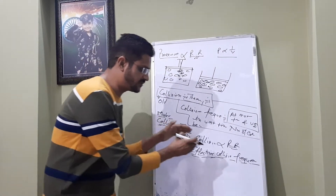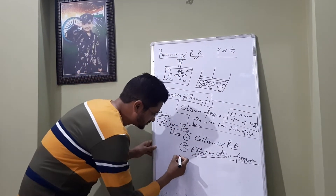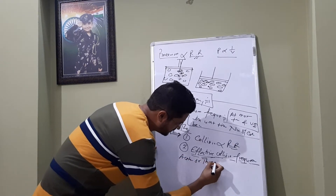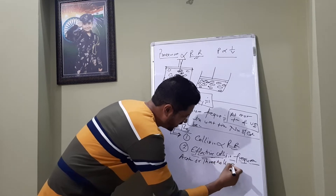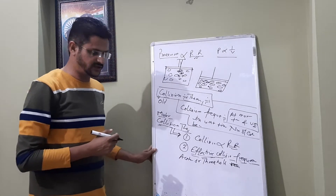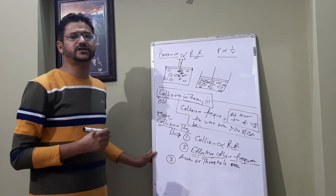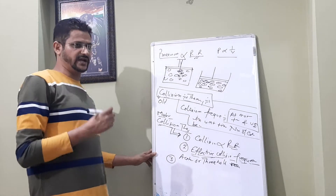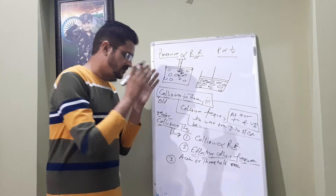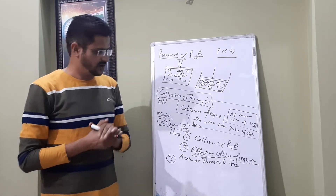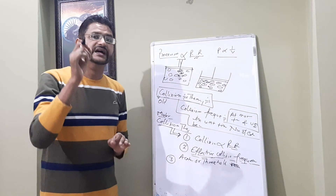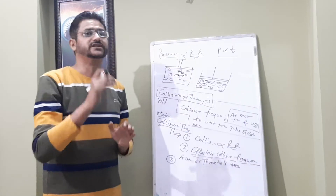So this is about effective collision frequency — a minimum activation energy or threshold energy is required. This is the second important postulate of modern collision theory. The third postulate: not only is effective collision important, but the direction or orientation of the collision is also important.